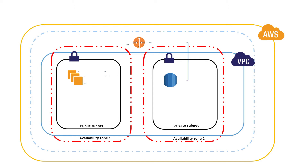We have a router, and through the router it routes the request from your NAT devices, EC2 instance, or your database. Any network traffic is routed via a router, and we have also discussed how the router sends the traffic through a route table.